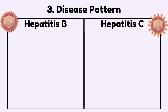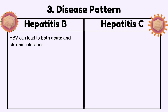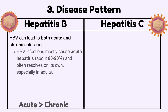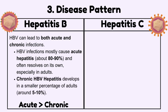Disease pattern of viruses: Hepatitis B can lead to both acute and chronic infections. Hepatitis B infections mostly cause acute hepatitis, about 80 to 90 percent, and often resolve on their own, especially in adults. Chronic Hepatitis B develops in a smaller percentage of adults, around 5 to 10 percent.